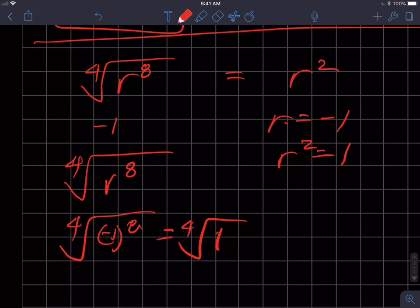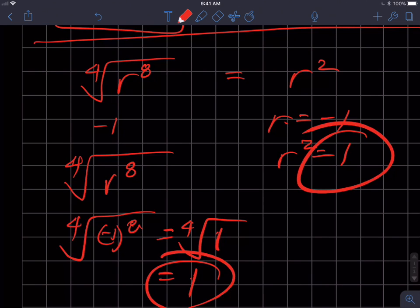Because if I multiply negative one eight times, I'll get a positive number, and of course again, the fourth root of one is one. So the negative sign doesn't get carried through in either case. That's why I don't have to use an absolute value on the r squared.